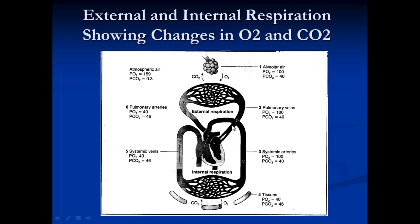The blood then goes to the heart where it is pumped to the rest of the body via the systemic arteries. The first artery is the aorta, which has the same partial pressures as after gas exchange in the lungs. When the blood begins to reach the tissues, the partial pressure of oxygen within the tissue is 40 and the partial pressure of CO2 is 46, because the tissues are respiring — using up oxygen and producing CO2.